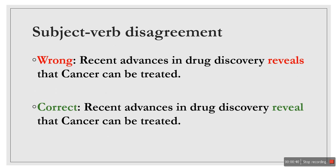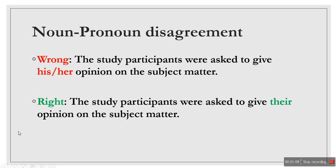Let me start with the first one: subject-verb disagreement. For example, the wrong sentence is: 'Recent advances in drug discovery reveals that cancer can be treated.' Here you can see that 'recent advances' is a plural noun, so it should be 'reveal' instead of 'reveals.' The correct sentence is: 'Recent advances in drug discovery reveal that cancer can be treated.'